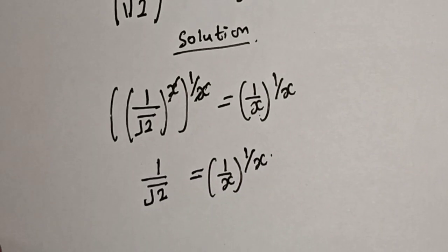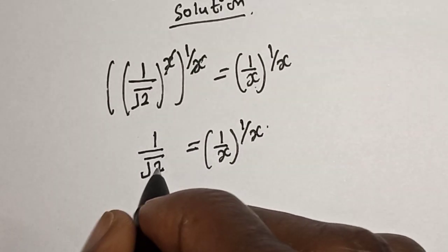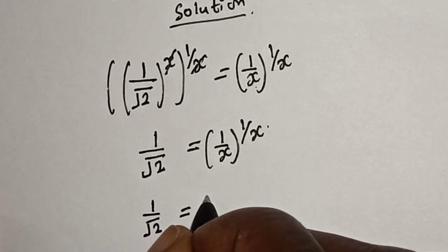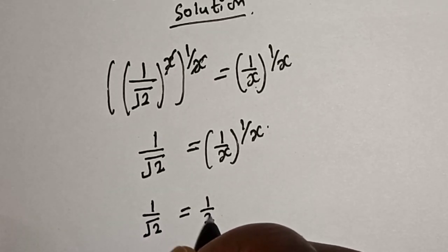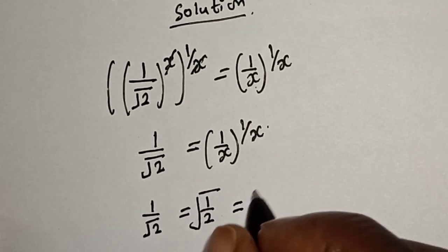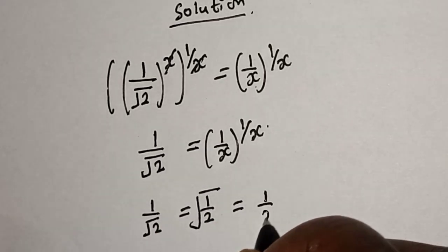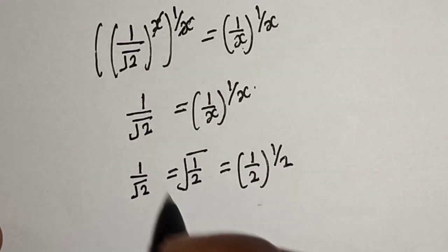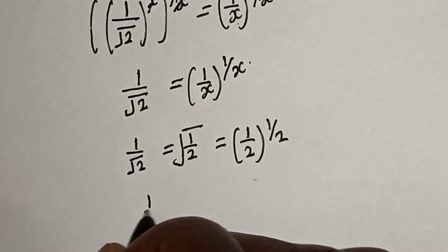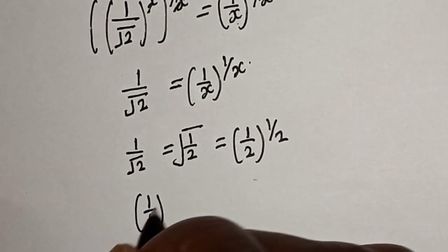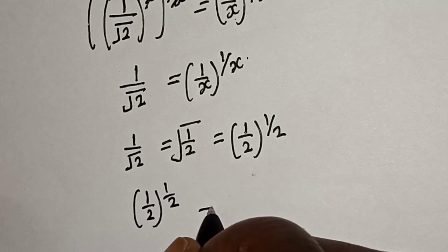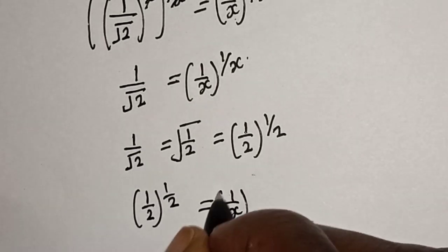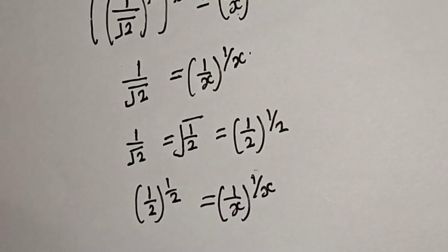Now this 1 over root of 2 can be written as 1 over 2 to the square root, which is equal to 1 over 2 raised to power of 1 over 2. Substituting, we have 1 over 2 raised to power of 1 over 2 is equal to 1 over s raised to power of 1 over s.